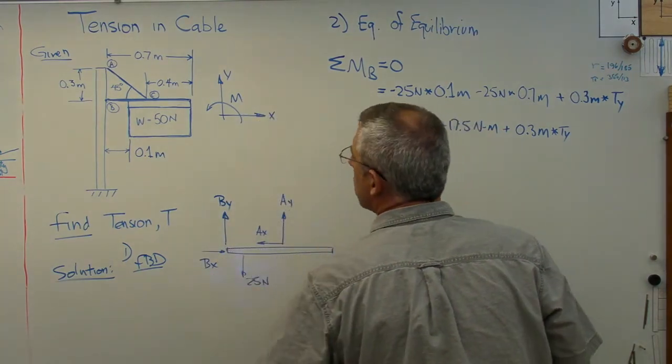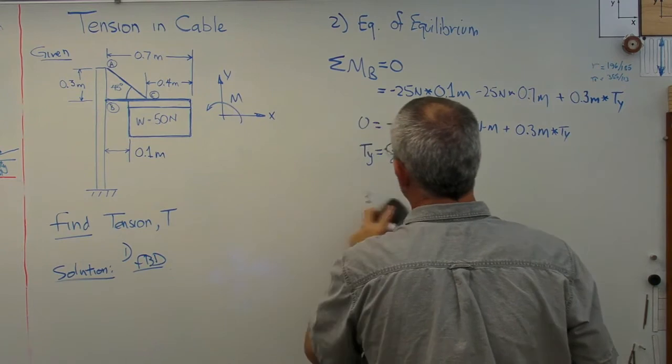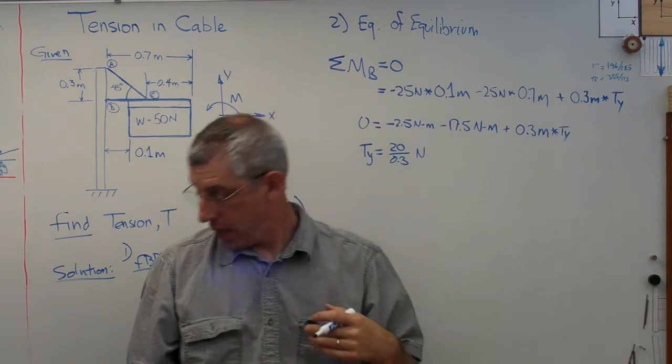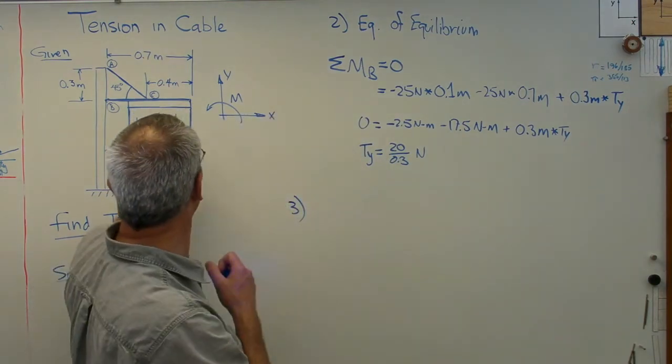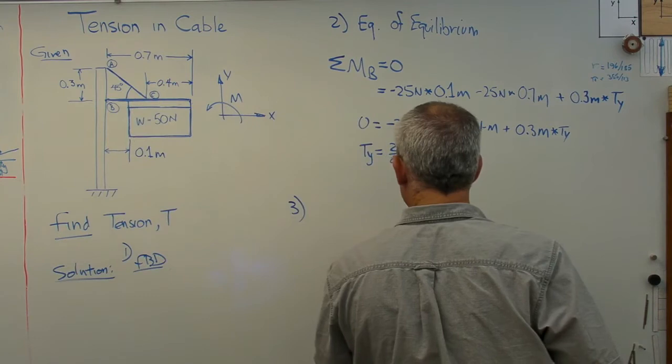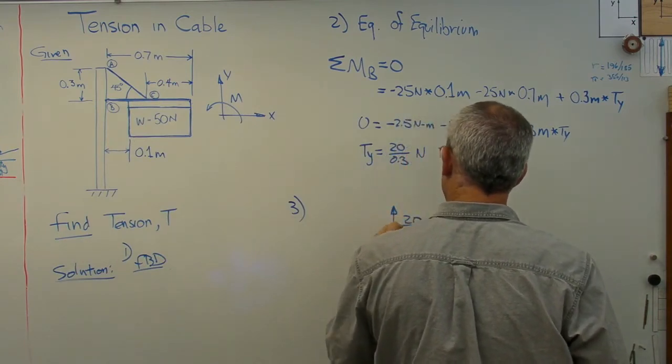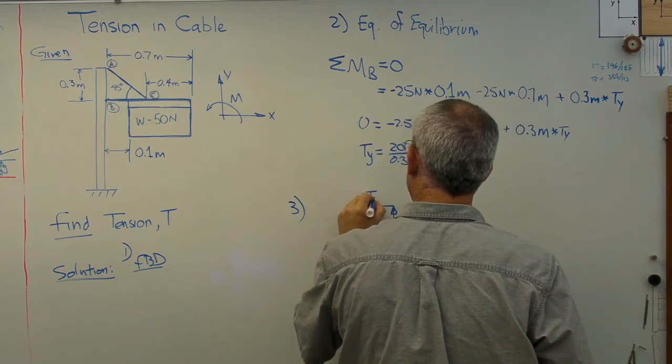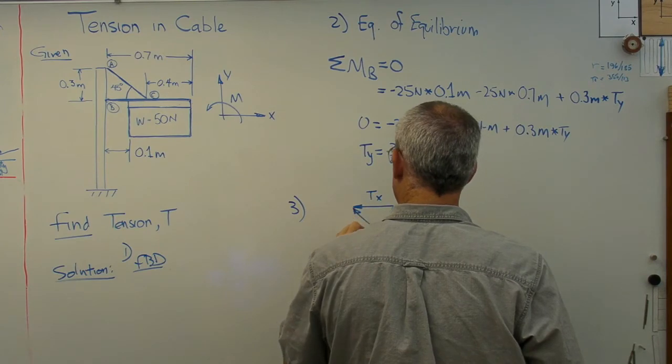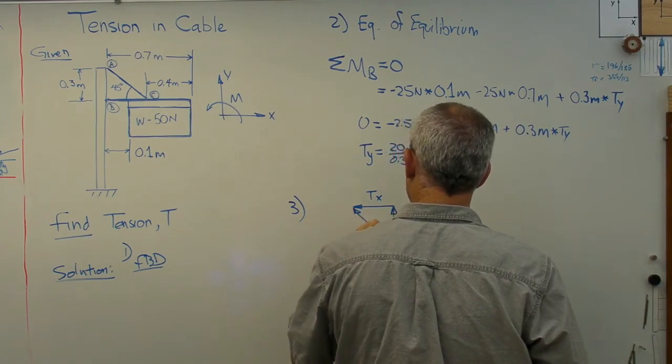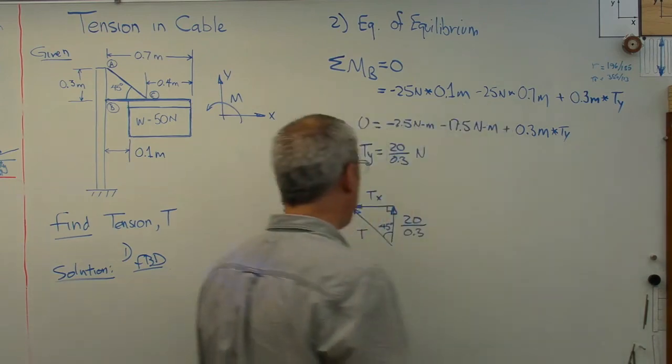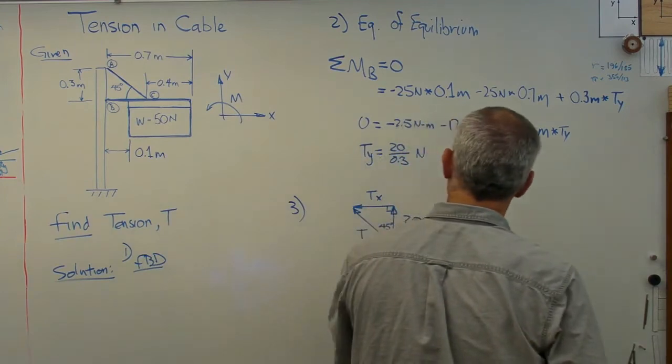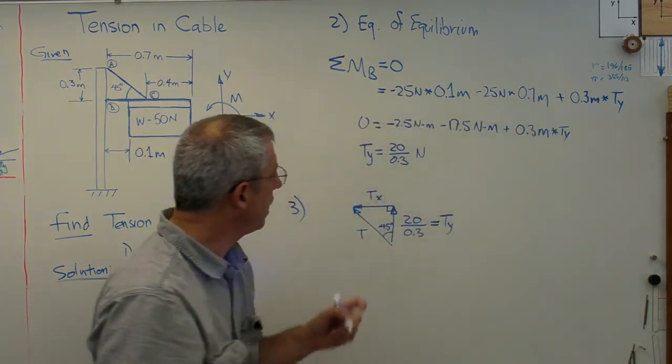The last thing I need to know is what's my tension. Well, let's see. I know the vertical component in a force triangle. So I know that's 20 over 0.3. I don't know what that is. That's TX. And that's T. That's 45. So there's T. There's my vertical component. That's TY. All right, and there's TX and 45.